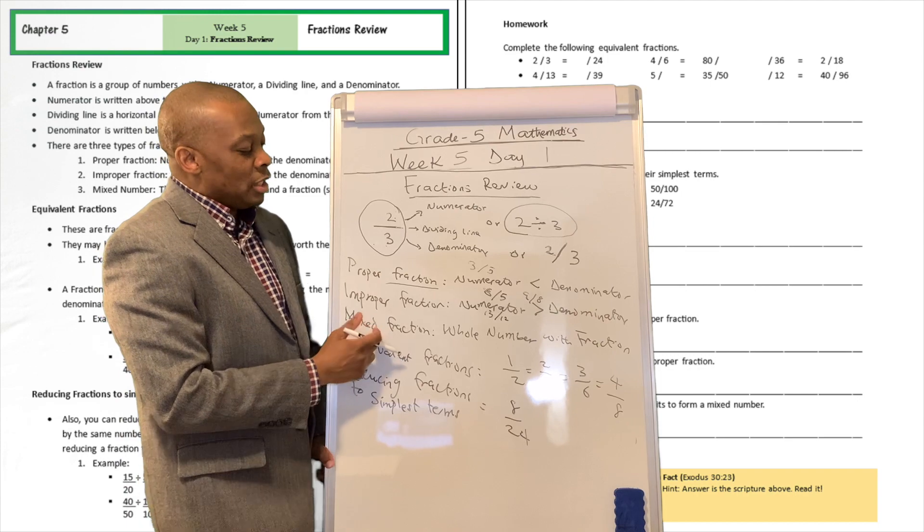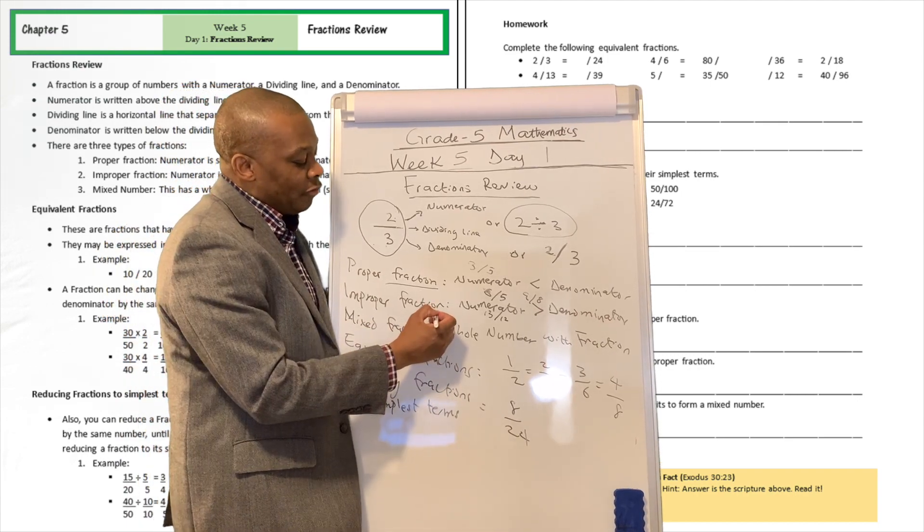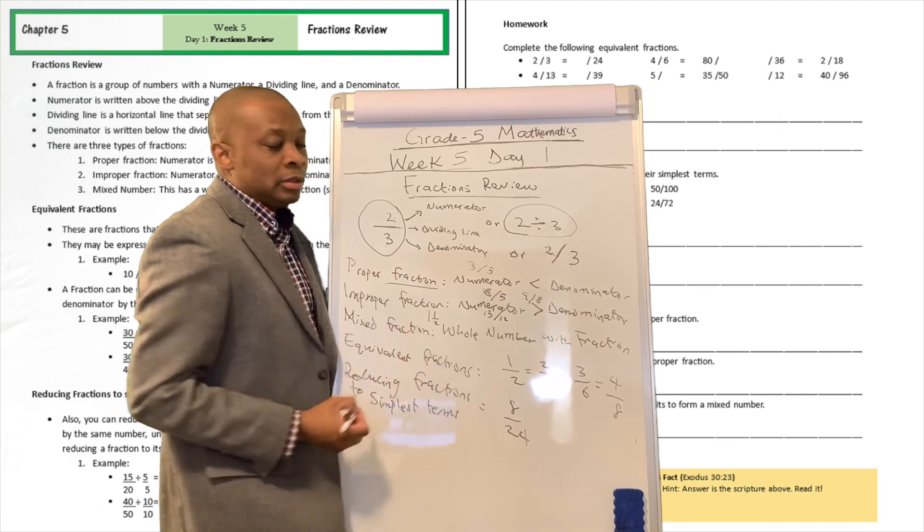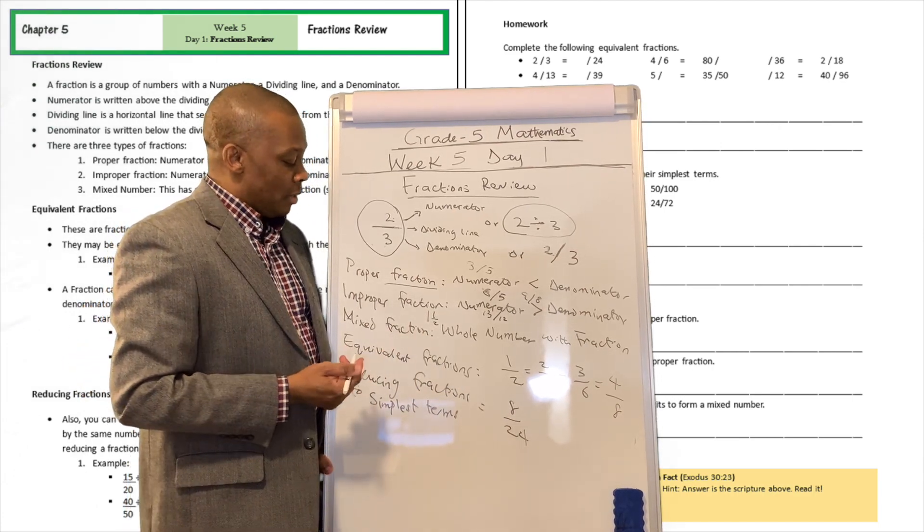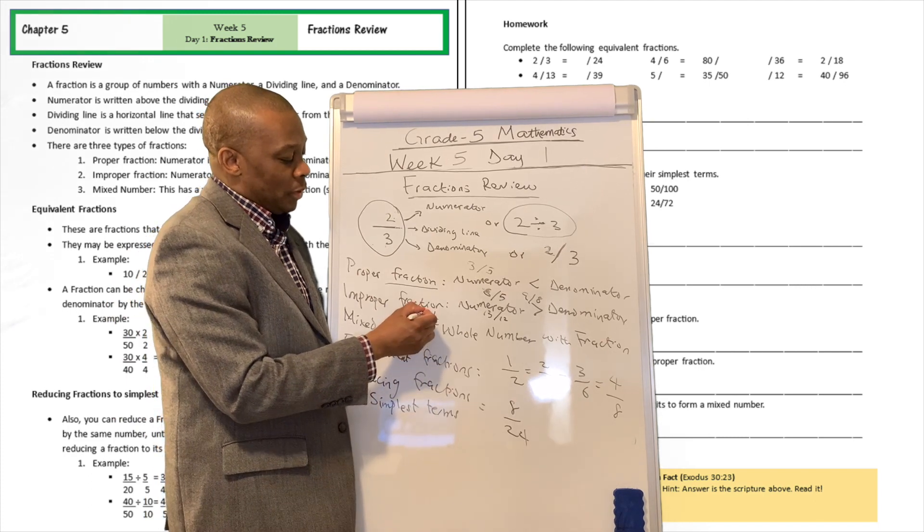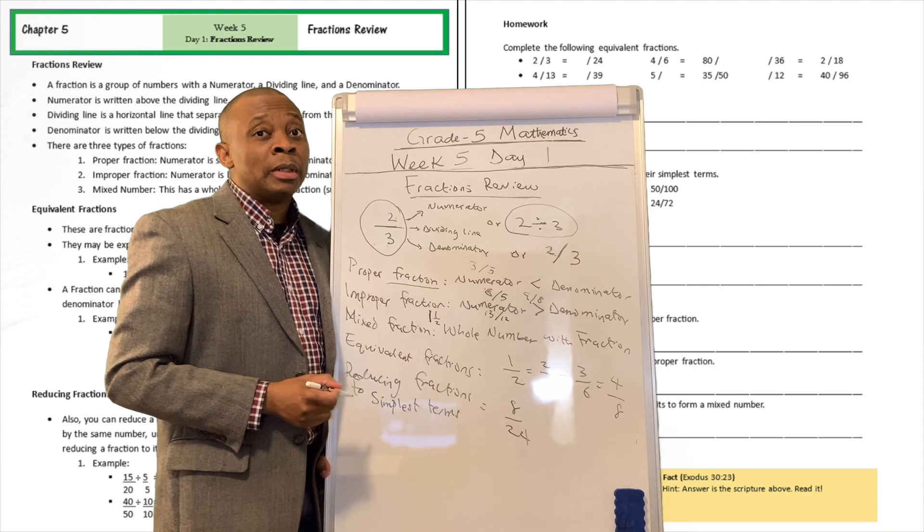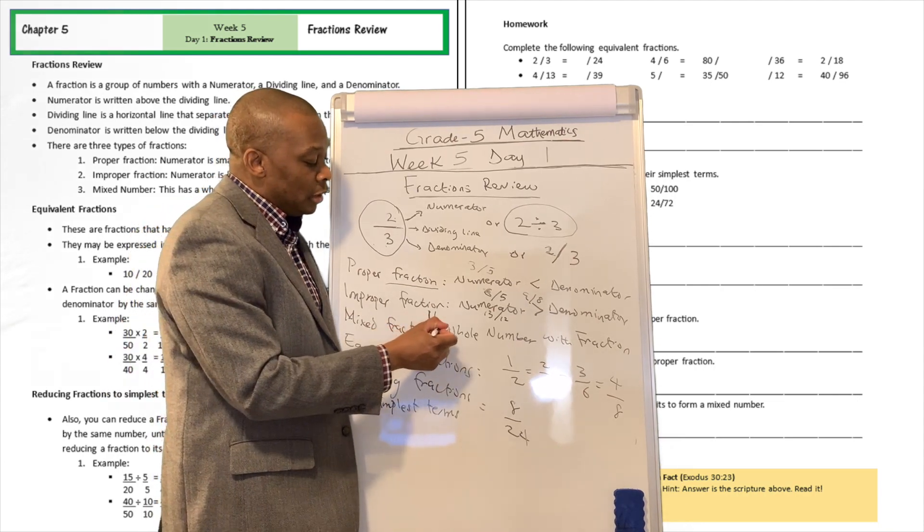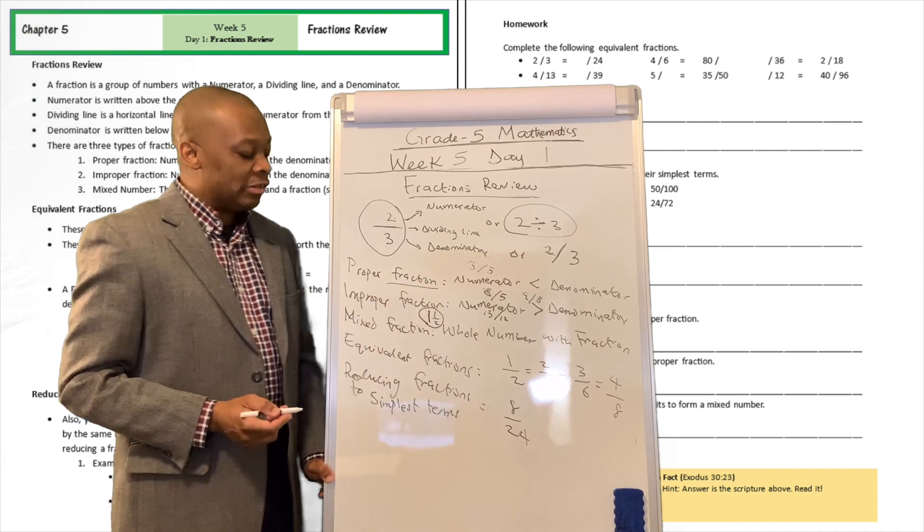What about mixed fractions? Now, when you have a whole number plus a fractional component of it, then you have a mixed number or mixed fraction. So that's, for example, this one over here is the whole number component of this total number, which is one and a half.